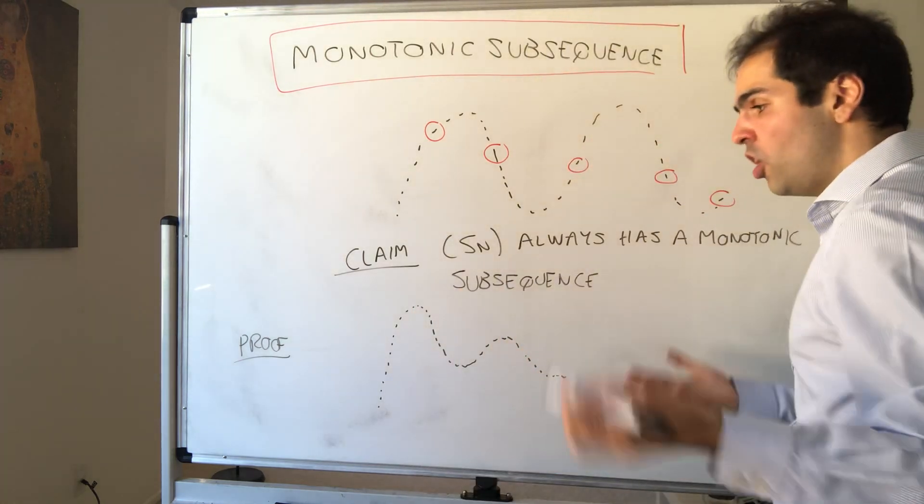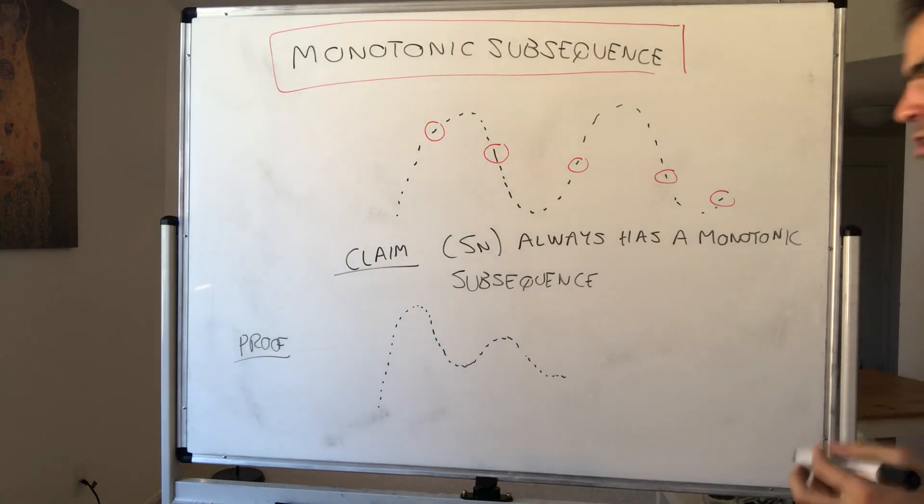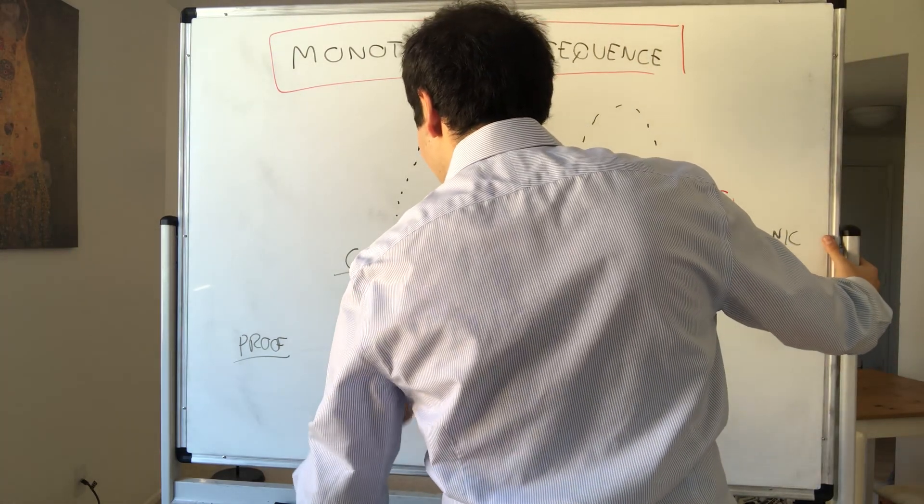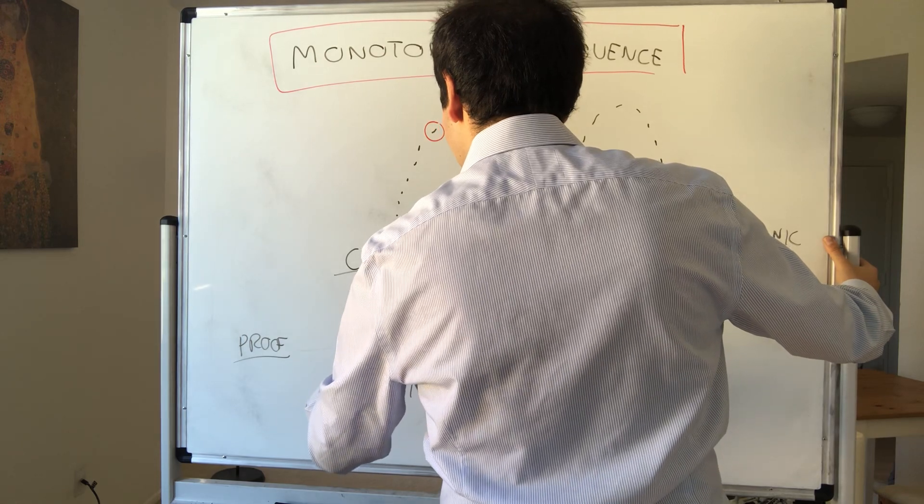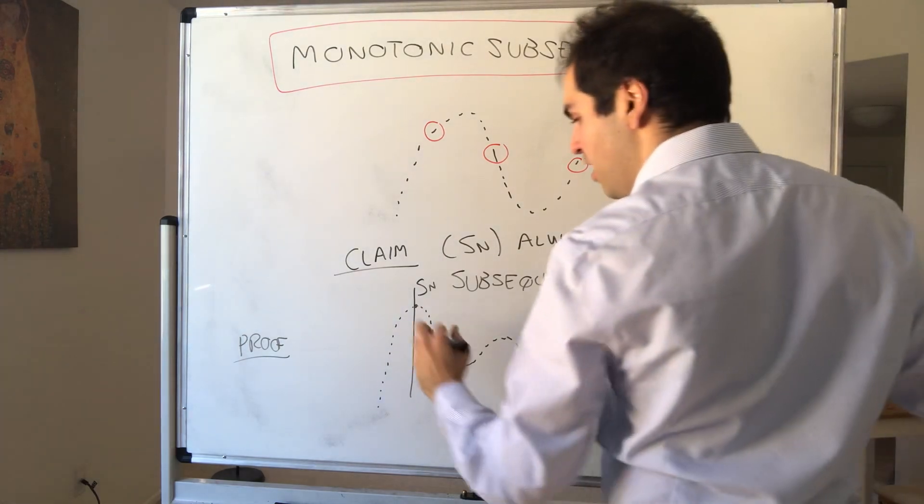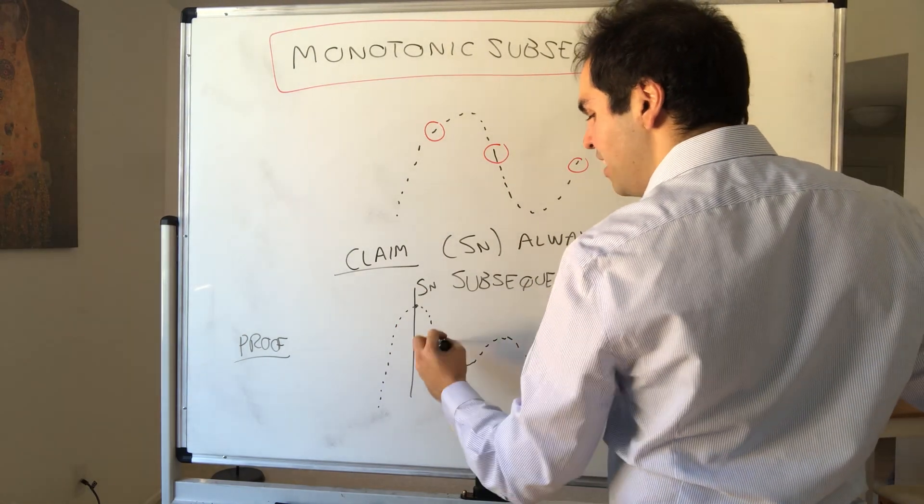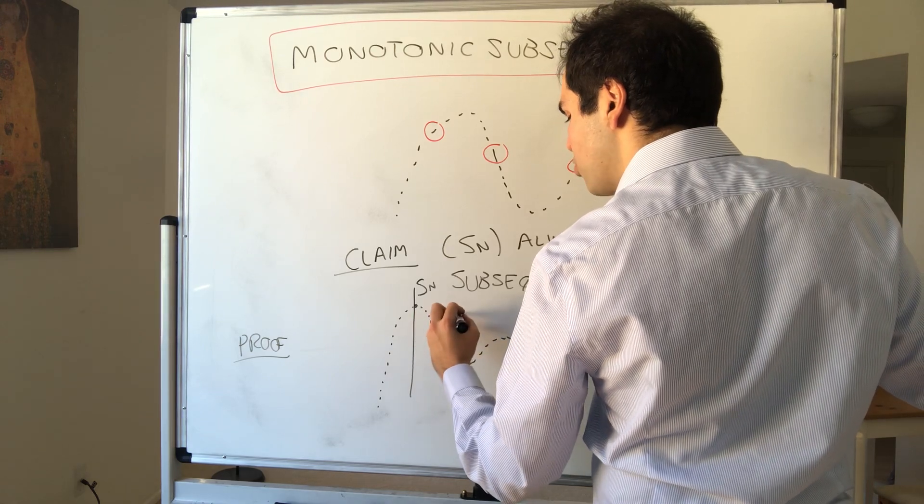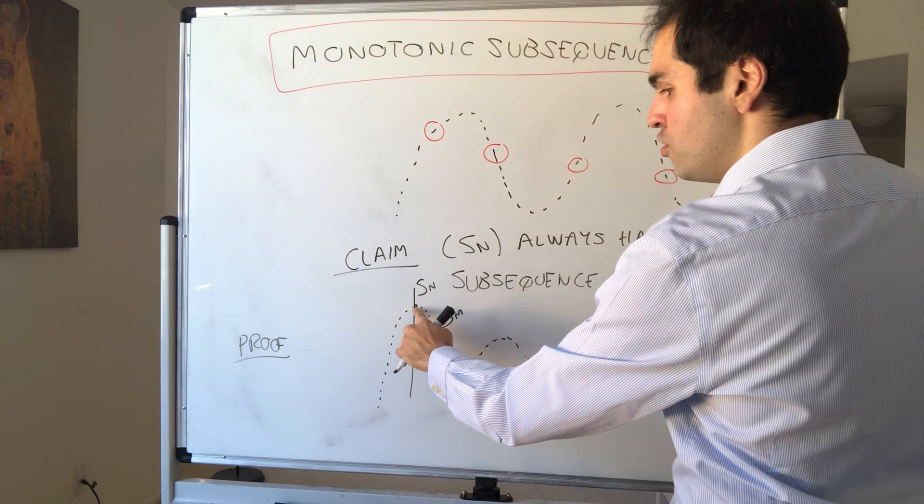And dominant term, think of it almost as a maximum or a peak, but all that it means is that if a term Sn is dominant, then anything after Sn just goes downhill. In other words, Sn is dominant if, whenever you have a term that comes afterwards, it has to be smaller.